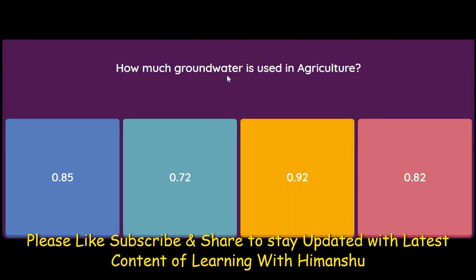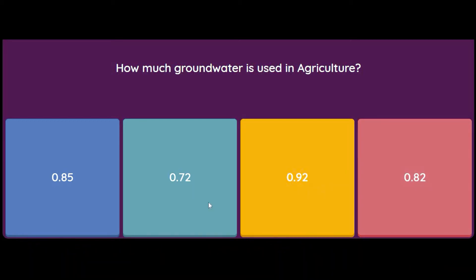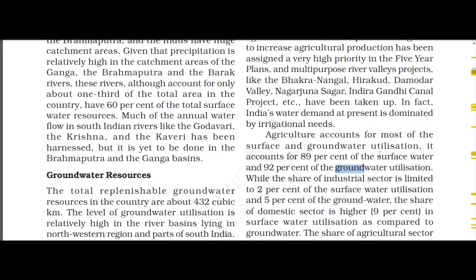How much groundwater is used in agriculture — 85, 72, 92, or 82 percent? The answer is 92 percent of groundwater is used in agriculture. Agriculture accounts for most of the surface and groundwater utilization — it accounts for 89 percent of surface water and 92 percent of groundwater utilization.